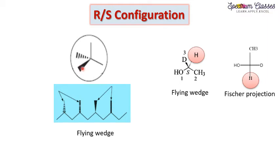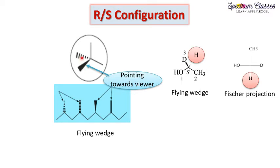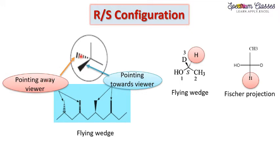The solid wedge represents that the group attached with it is pointing towards the viewer. However, the dashed wedge represents that an atom or group attached with that dashed line is pointing away from the viewer. This point needs to be considered while we are writing the RS configuration for flying wedge structures.